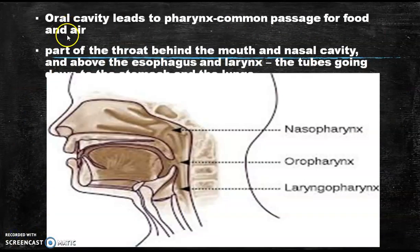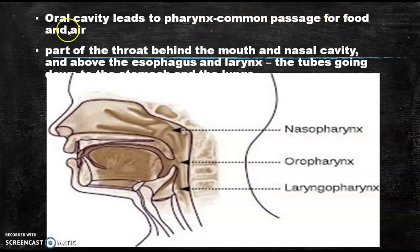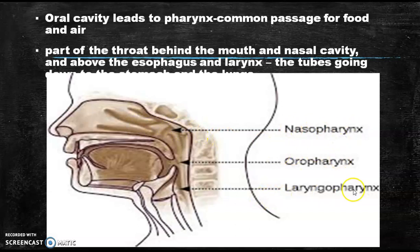The oral cavity leads to the pharynx, which is a common passage for food and air. It is considered the part of the throat behind the mouth and nasal cavity, and above the esophagus and larynx. The pharynx is divided into three parts: nasopharynx, oropharynx and laryngopharynx. The nasopharynx is the upper part, followed by oropharynx, and ending in laryngopharynx.